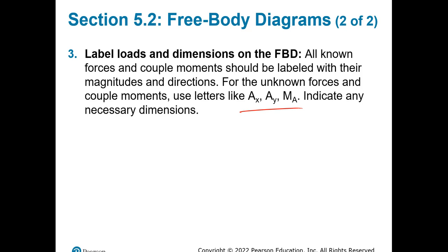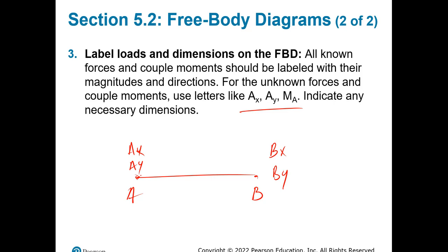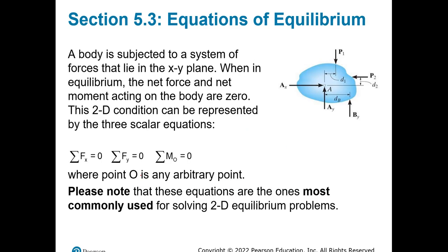If you have a beam from A to B, depending on the support, you will have reactions at those points. If you have reactions in the X and Y direction, you'll label them AX, AY, BX, and BY. Being organized is very important, especially when you have a large system with multiple beams or elements.